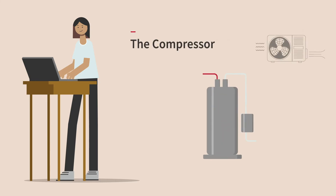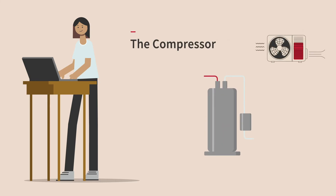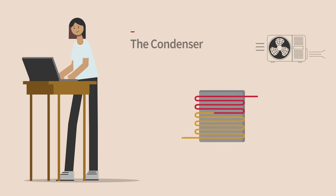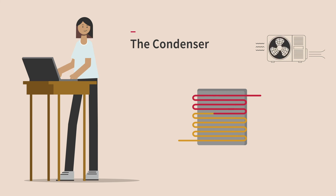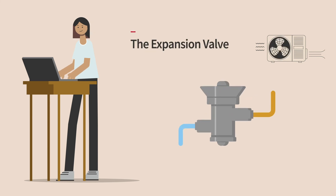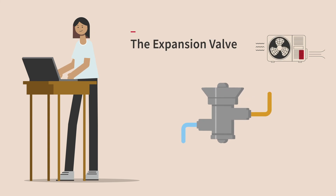The compressor is the heart of the system, located in the outdoor unit, and is essential for transferring heat from indoors to outdoors. The condenser has its own fan that blows air across the condenser coil to transfer the heat. The expansion valve controls the amount of refrigerant flowing into the evaporator coil for improved performance.